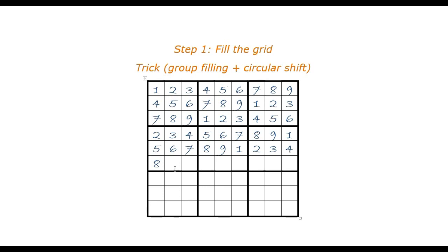The constraint here is: every digit appears once and only once in each row, column, and box.